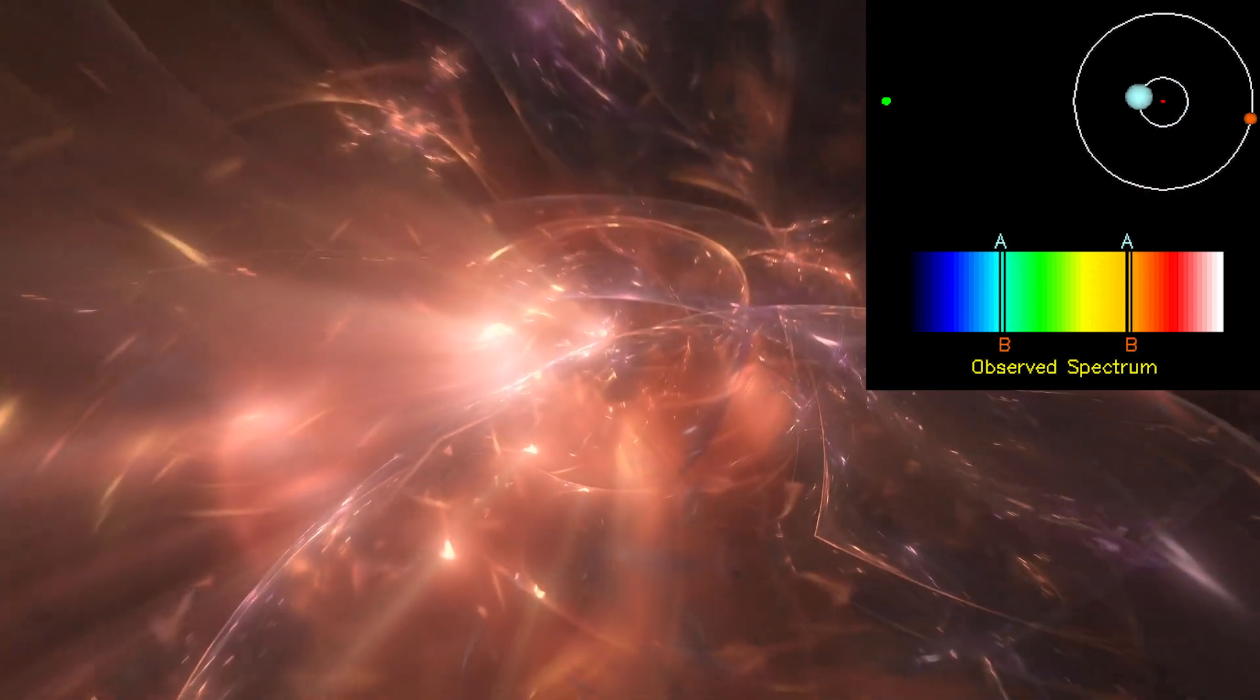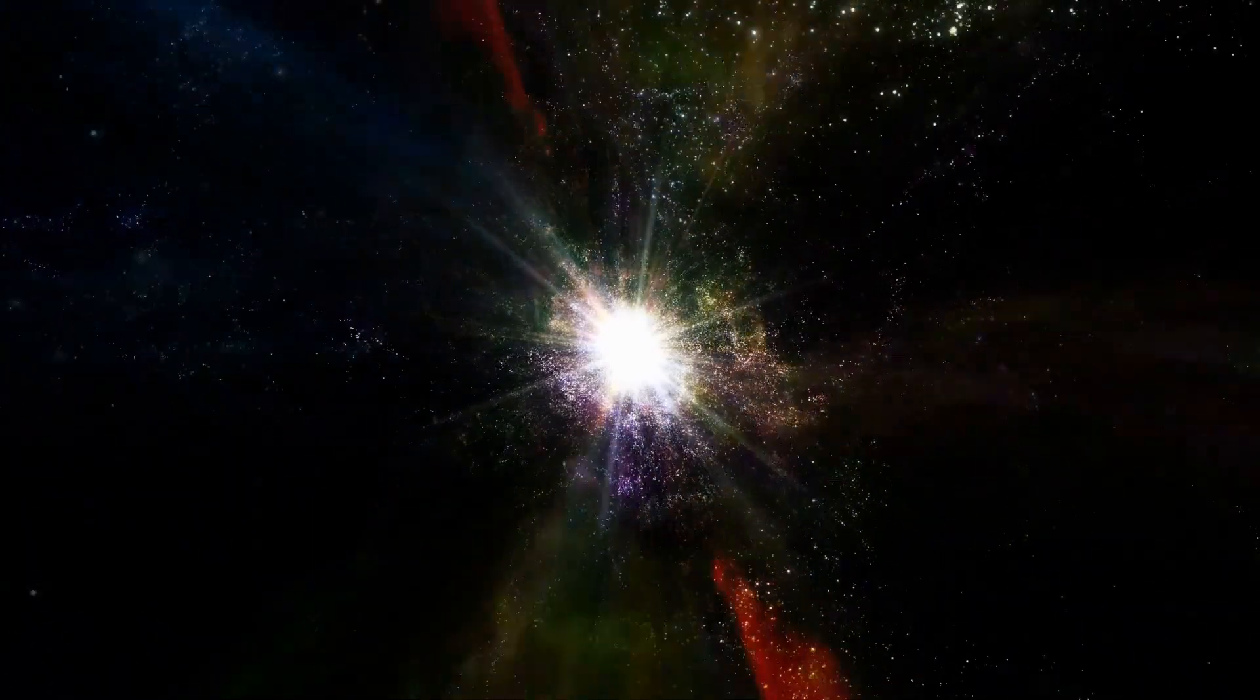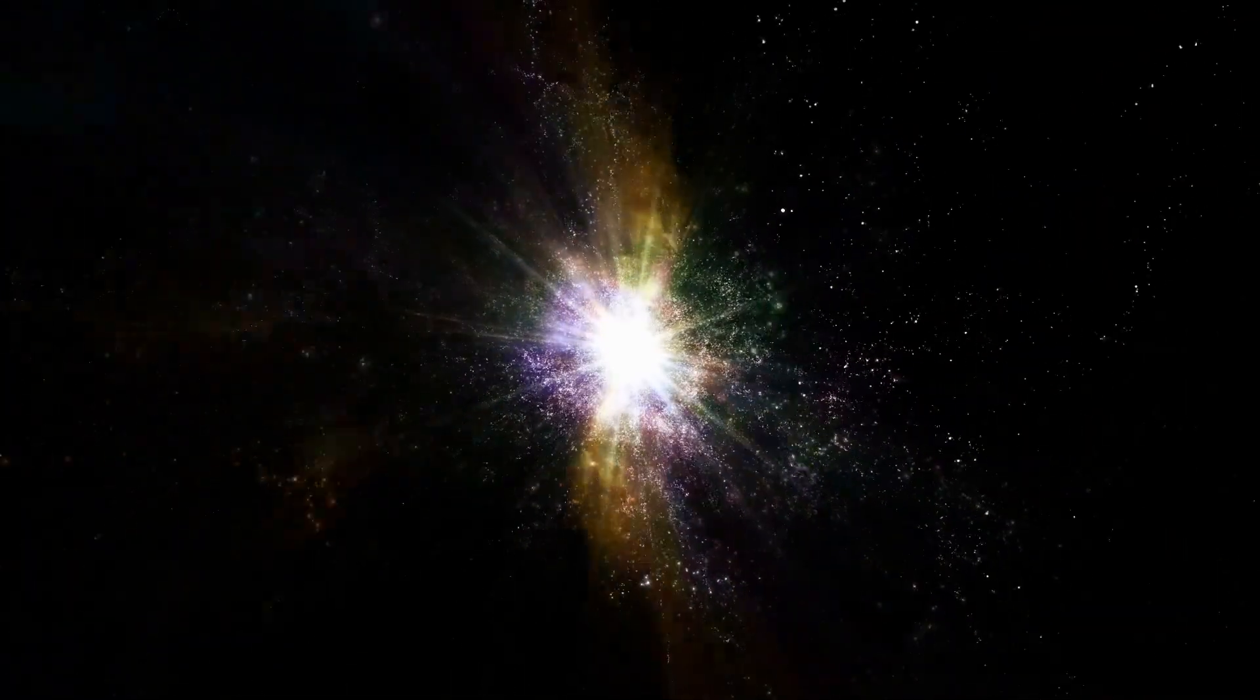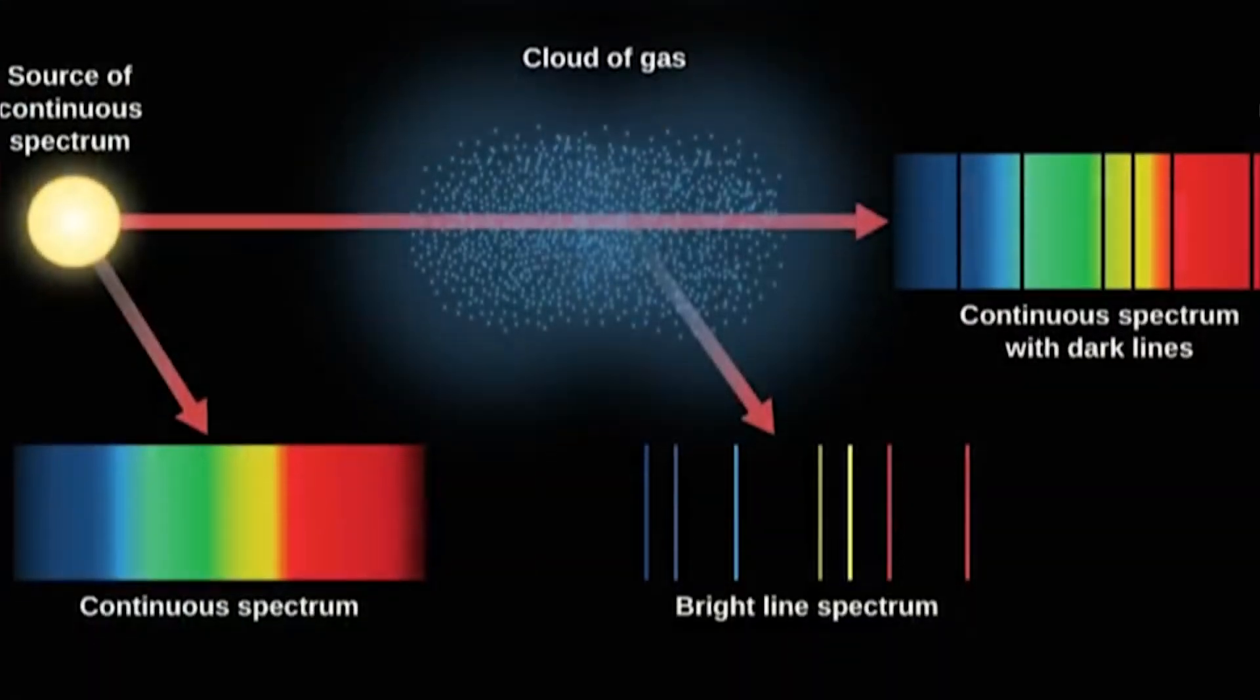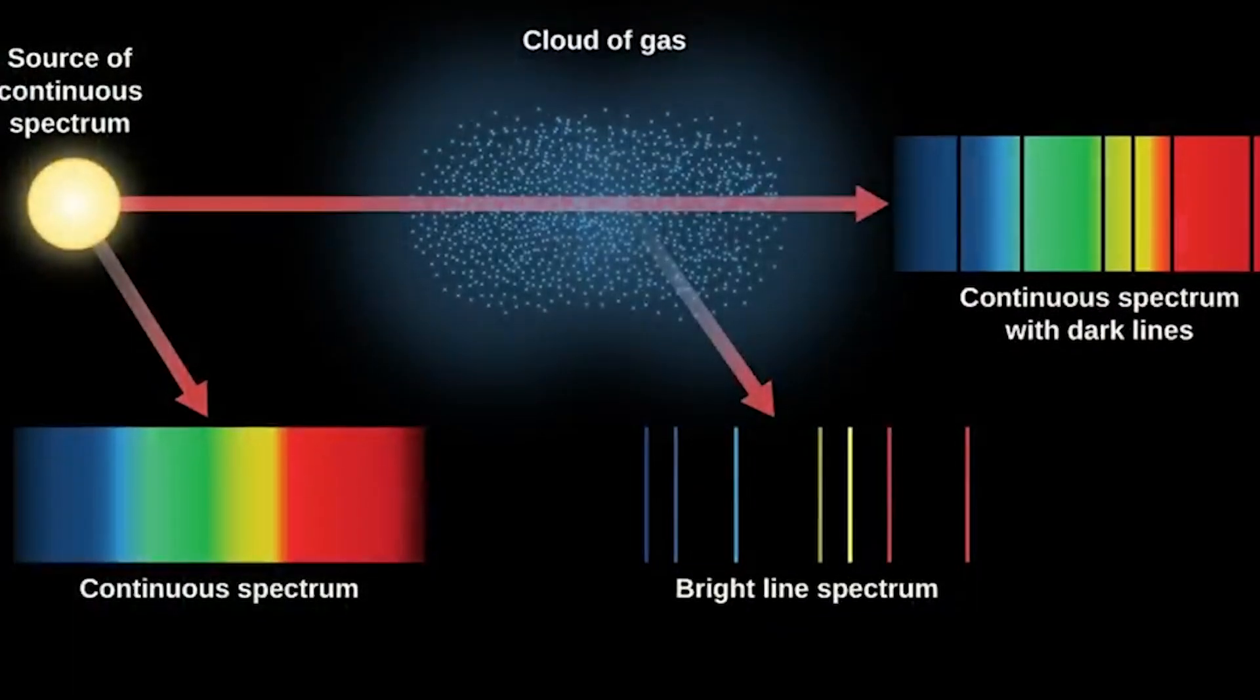But there are other factors at play, too. Sometimes, the movement of objects in a gravitational field can also cause redshift. It's like how a car's horn sounds different as it approaches you versus when it moves away. This effect is known as the Doppler effect. In astronomy, it means that if a light source is moving relative to an observer, its light gets shifted towards the red end of the spectrum.